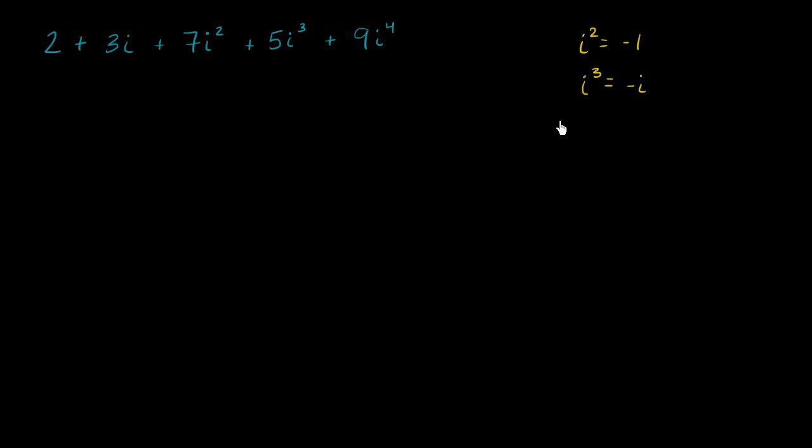And we already reviewed this when we first introduced the imaginary unit i, but I'll do it again. i to the fourth power is just going to be i times this, which is the same thing as negative 1 times i. That's i to the third power, times i again. i times i is negative 1. So that's negative 1 times negative 1, which is equal to 1 again.